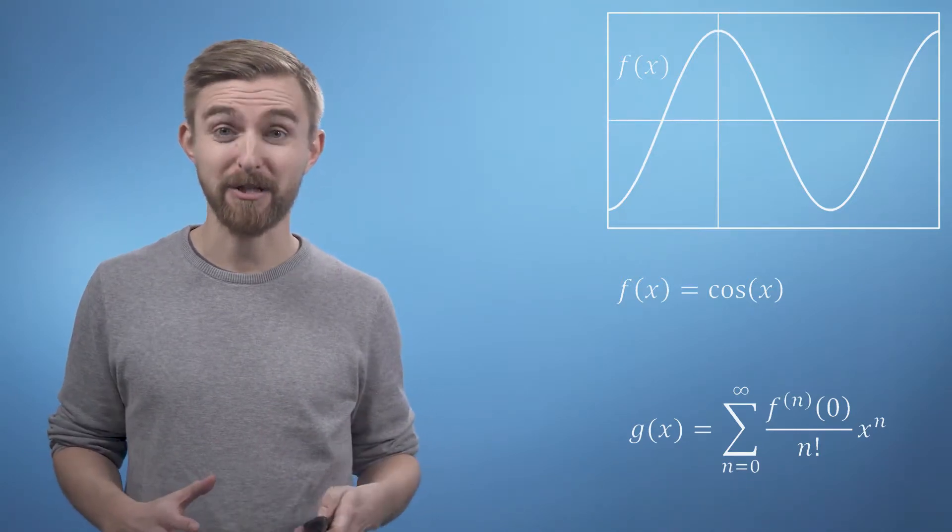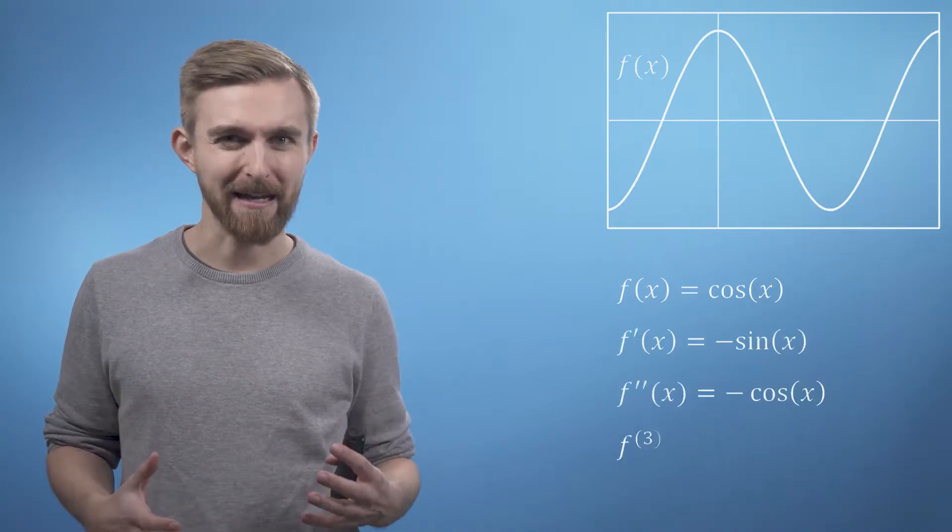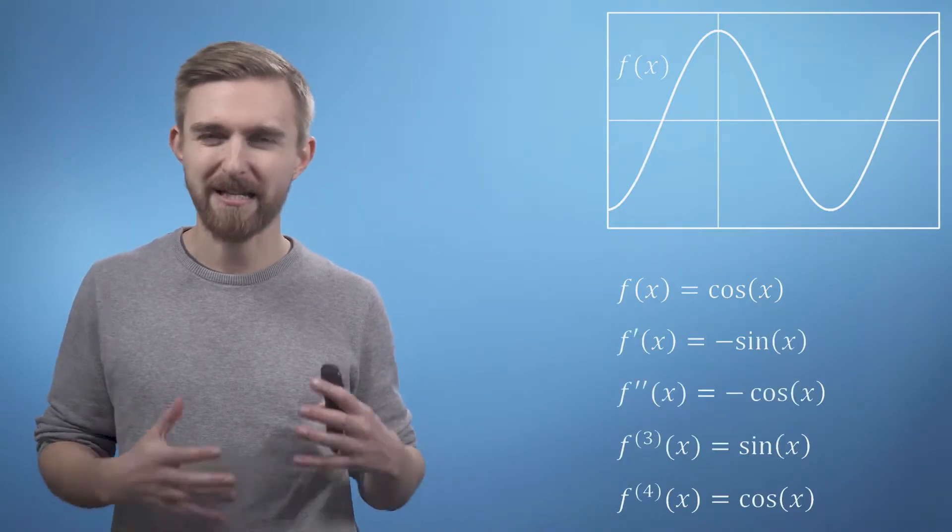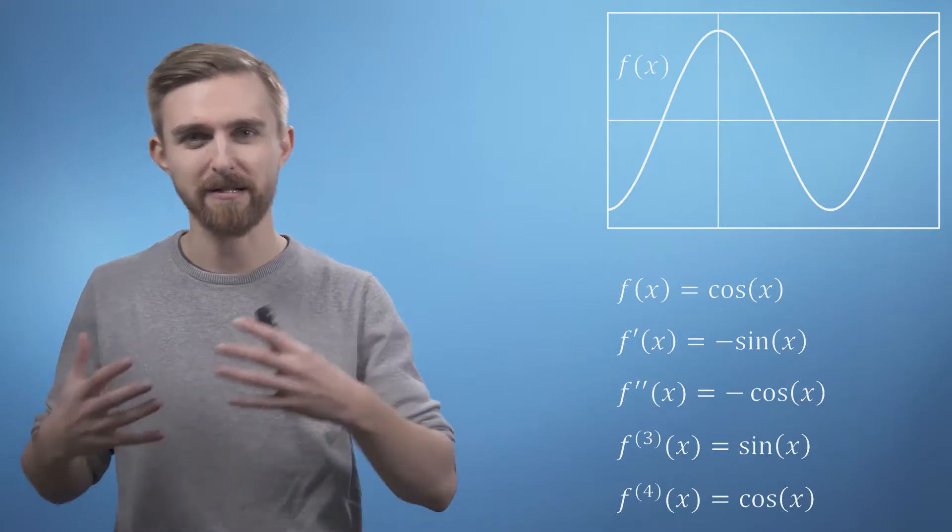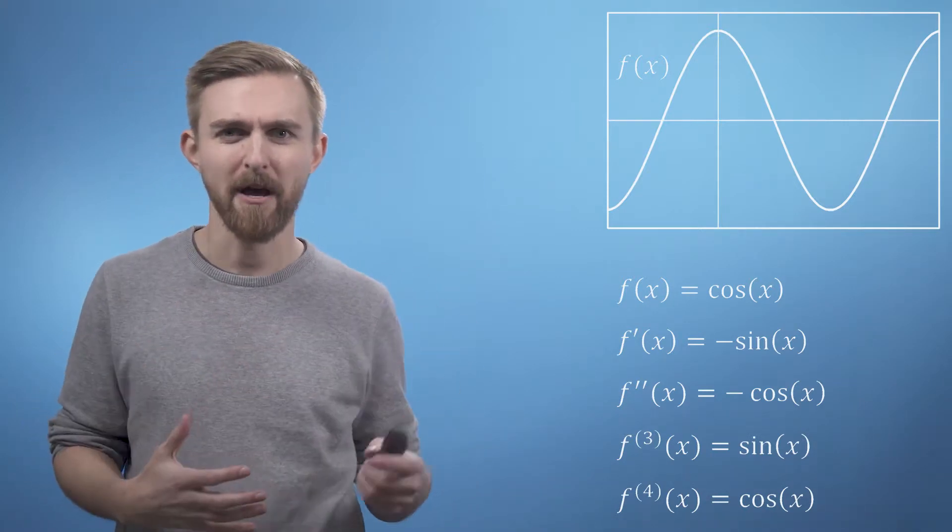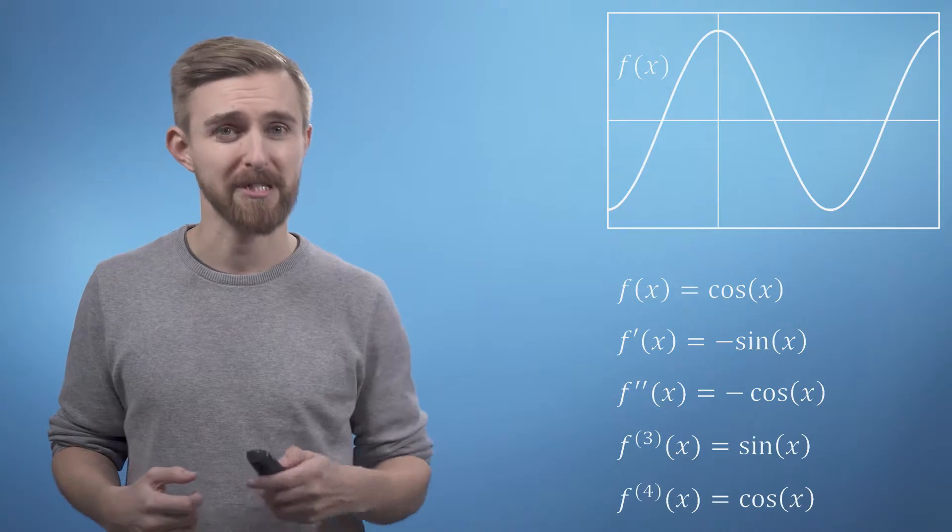So let's start by doing some differentiation. And what we get if you remember from earlier in the course is this cyclic pattern of cosines and sines positive and negative which takes us back to the cosine again after four steps.